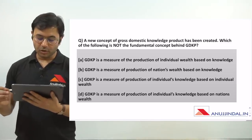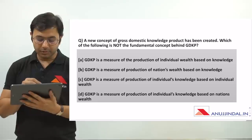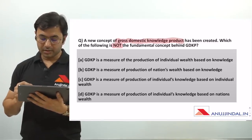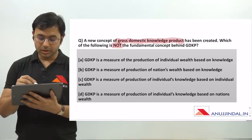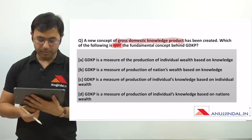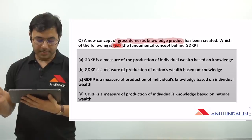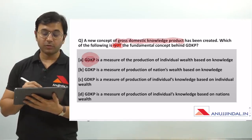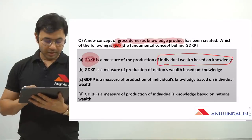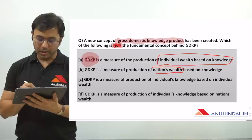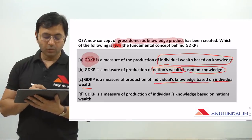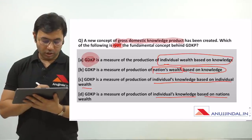The first question: a new concept of Gross Domestic Knowledge Product has been created. Which of the following is the fundamental concept behind GDKP? Option A: GDKP is a measure of the production of individual wealth based on knowledge. Option B: GDKP is a measure of production of a nation's wealth based on knowledge. Option C: GDKP is a measure of production of individuals' knowledge based on individual wealth. Option D: GDKP is a measure of production of individuals' knowledge based on nation's wealth.